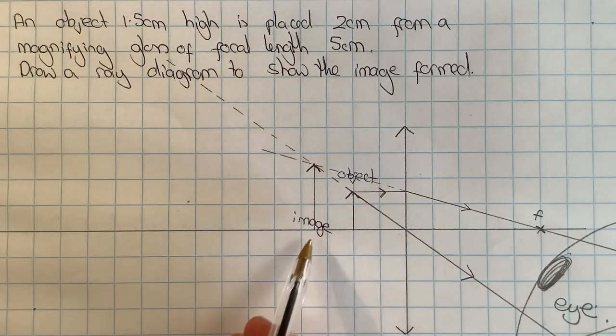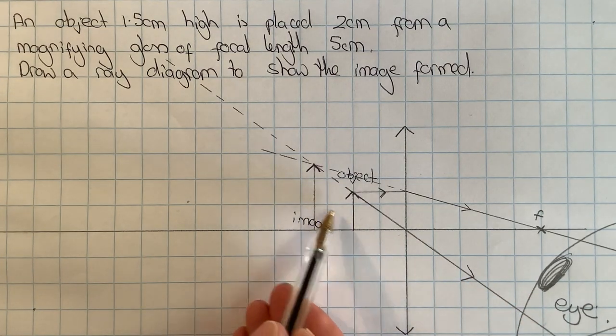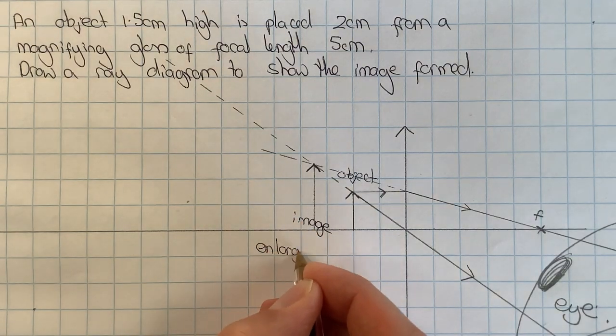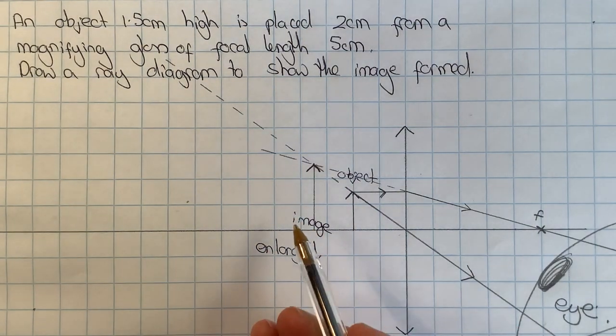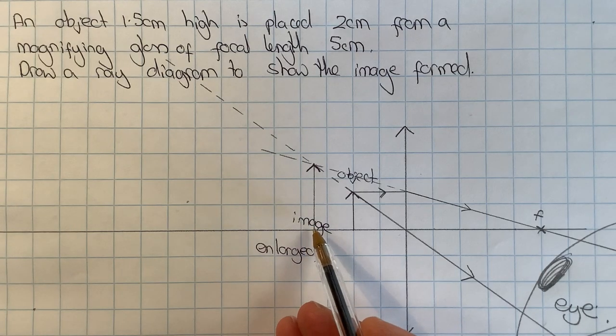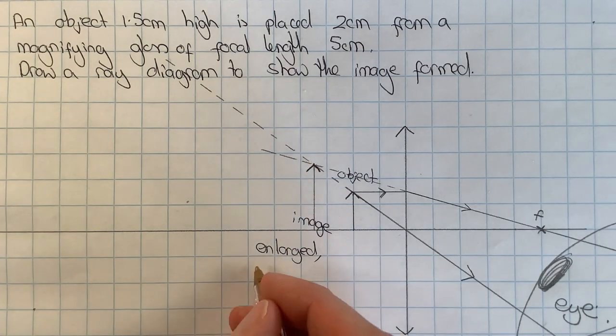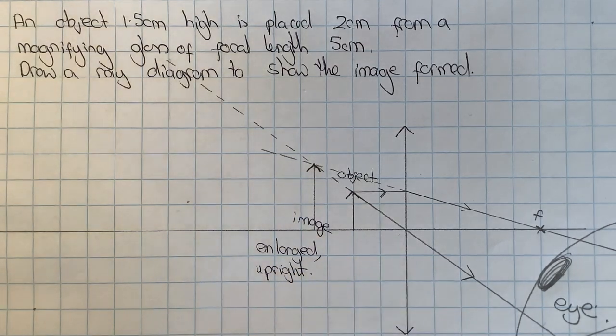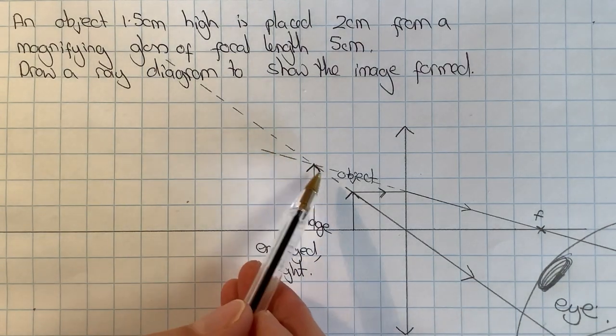Looking at my image, I can see that it is an enlarged image. It is the correct way up, which I can describe as upright, and because it involved virtual rays crossing, I know that it is a virtual image.